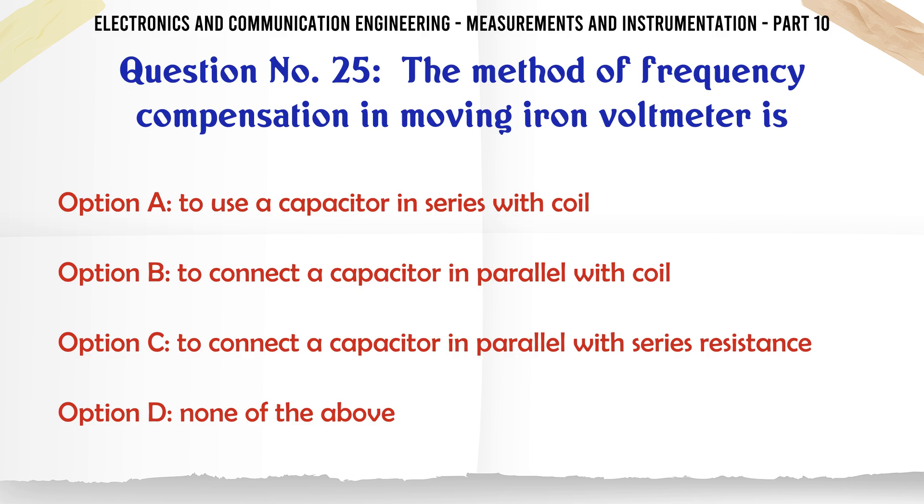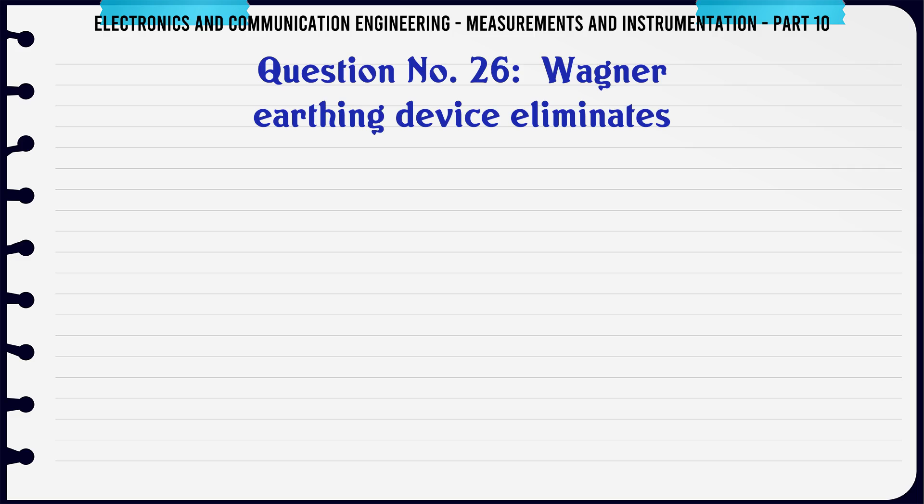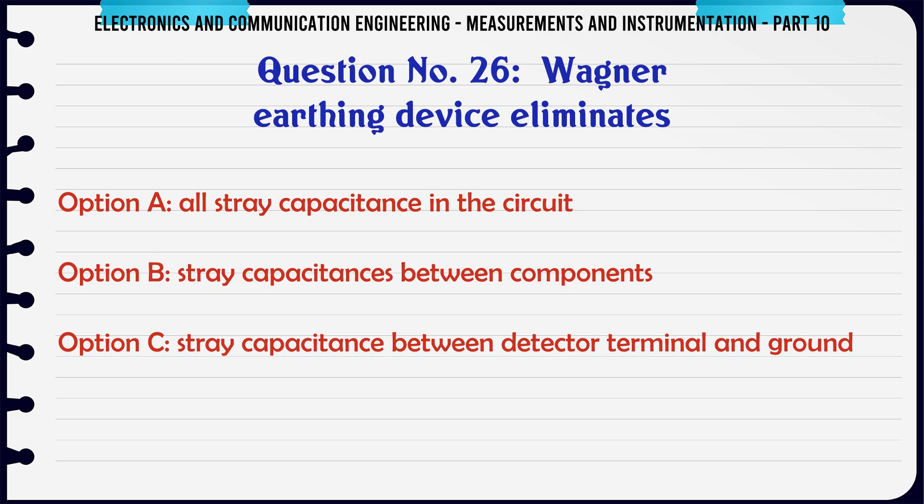The method of frequency compensation in moving iron voltmeter is: A) to use a capacitor in series with coil, B) to connect a capacitor in parallel with coil, C) to connect a capacitor in parallel with series resistance, D) none of the above. The correct answer is to connect a capacitor in parallel with series resistance.